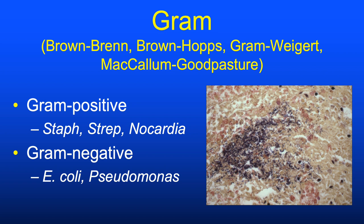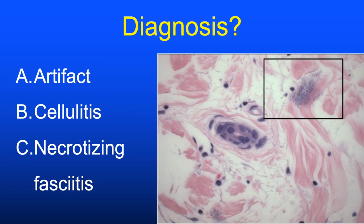Gram stains for bacteria can be somewhat subjective and subject to technical factors. Looking at this image, we see cocci that are sitting on collagen fibers a little out of the plane of the tissue section. A true infection such as cellulitis or necrotizing fasciitis would have a more diffuse infiltrate of pathogens—not just sitting on collagen fibers—so this is technical artifact. It's important to avoid overcalling infection when it's not there.